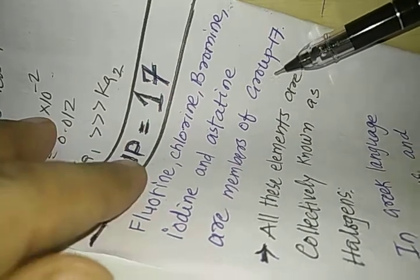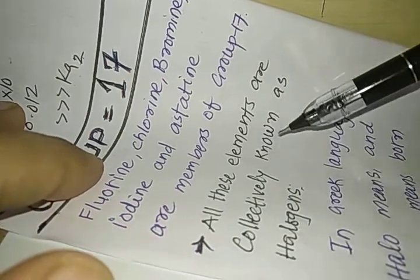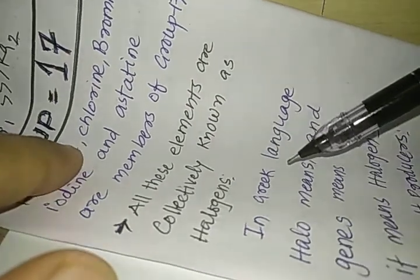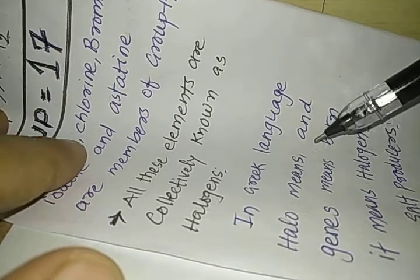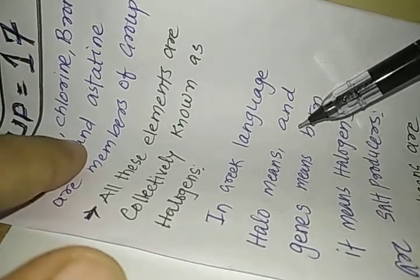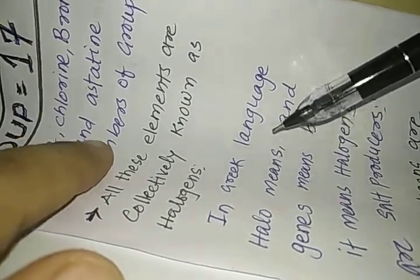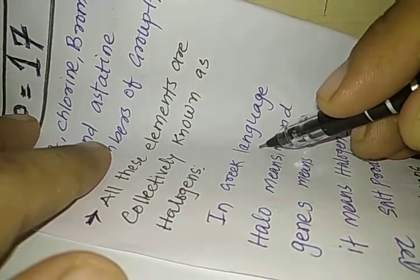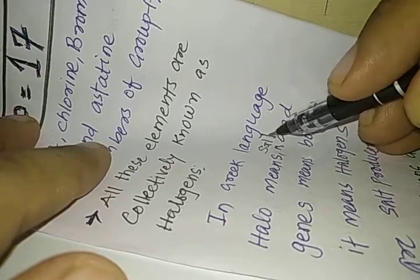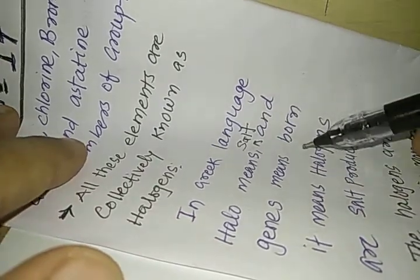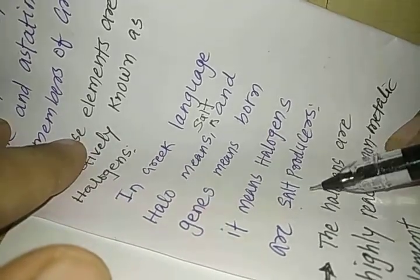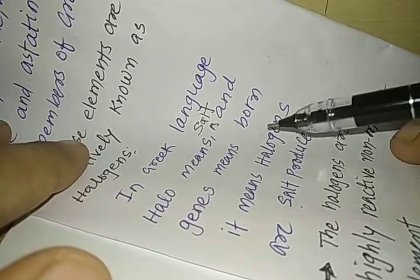All these elements are collectively known as halogens. In Greek language, halo means salt and gens means born. Halogens means salt producers.